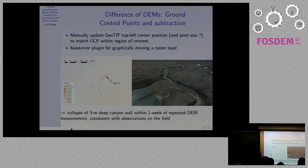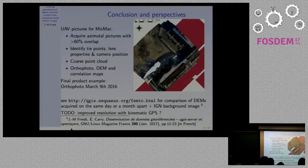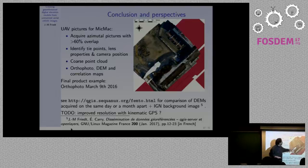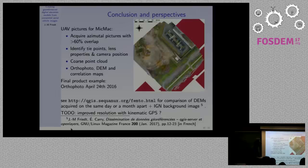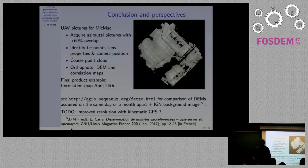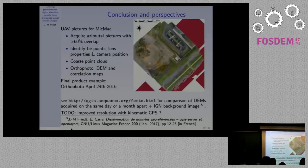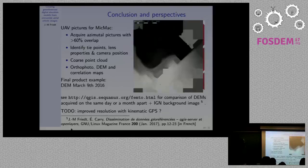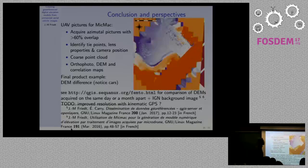Closer to home, I did the same thing with the parking lot next to our laboratory. I collected two DEMs — one at the end of September and one in May. The correlation map shows poor results on grass areas, since grass has few distinguishing features for MicMac, but very good correlation on parking lot and soil-covered areas. The DEM shows the parking lot and parked cars, and when I do the DEM subtraction, I can see which cars have moved between the two acquisitions.